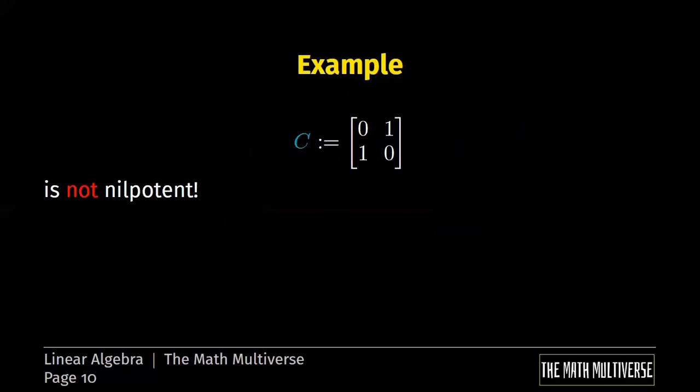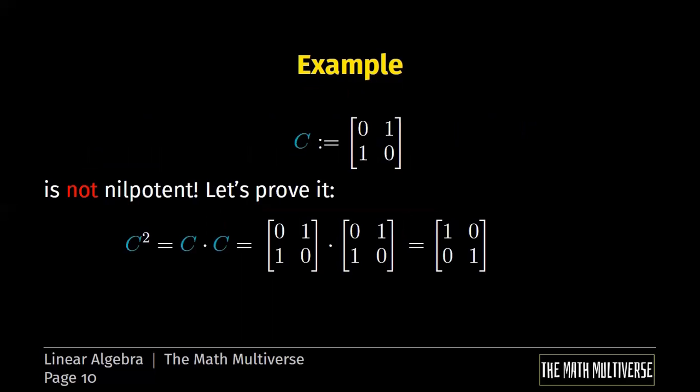We have the matrix C, 0, 1, 1, 0, a very simple example. Let's compute C squared. Again, C squared is nothing but C times C. Let's compute this. It's an easy computation. The result will be 1, 0, 0, 1. It's not the matrix C, but it's not even the zero matrix. By the previous property, we know for sure that this matrix is not nilpotent because C to the 2, and 2 is the order of the matrix C, is not the zero matrix. So our matrix is not nilpotent.